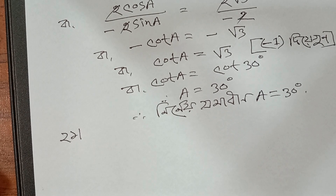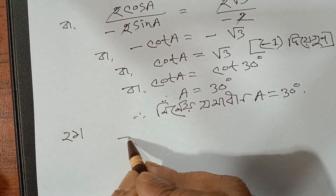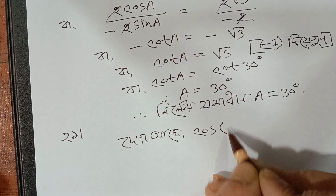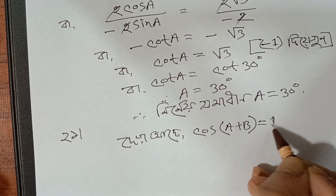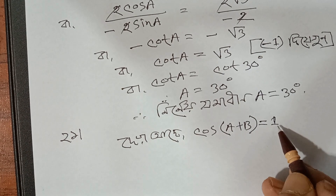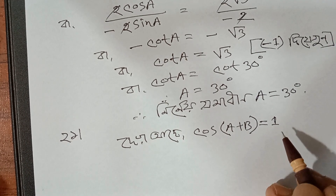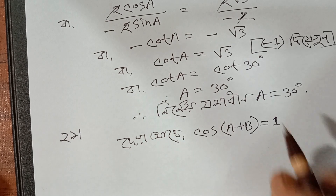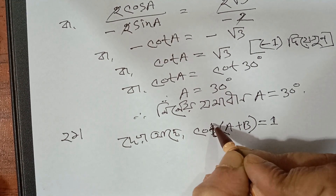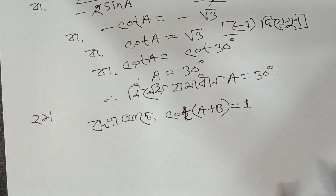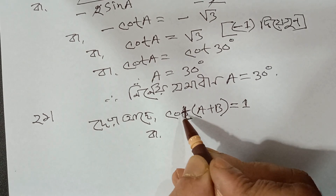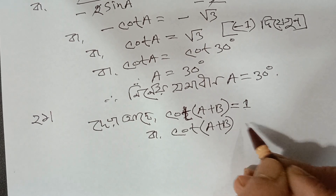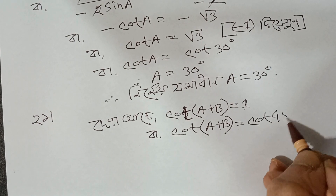Cos a plus b equals 1. We know that cos of what degree equals 1. Just place the value on the right side. The cut is 45 degrees — sin, cos, tan — so we can get rid of the cut. When we have cut, we can get rid of the cut. Cut 45 is 1.